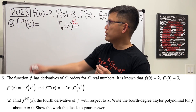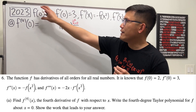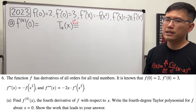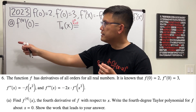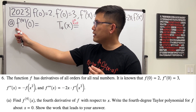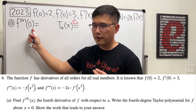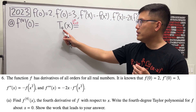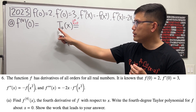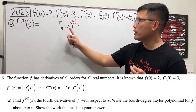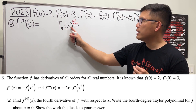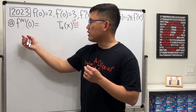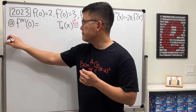This is the 2023 problem. We have a function with all these conditions. Part A says we are going to find the fourth derivative of the function at zero, and then after that we need the fourth degree Taylor polynomial of the function at x equals zero.